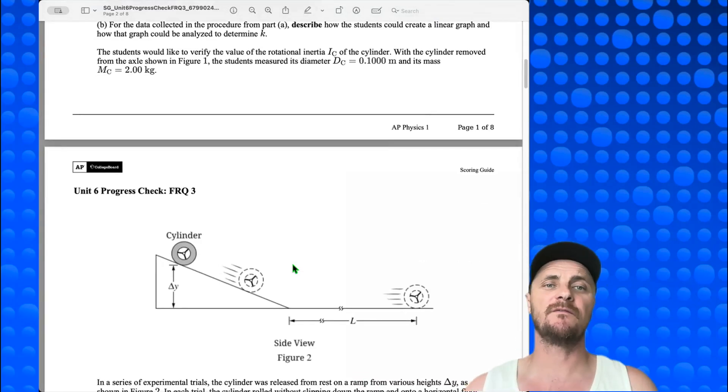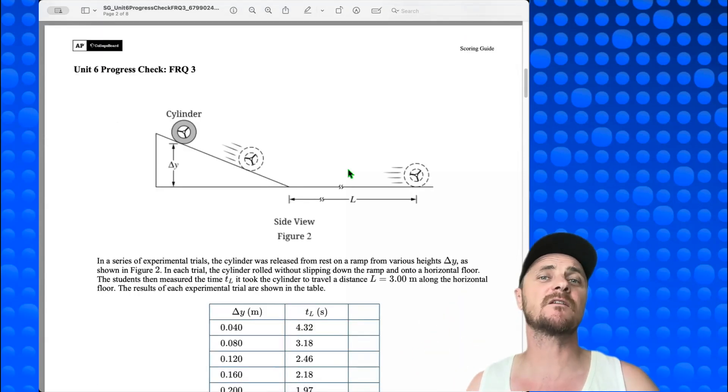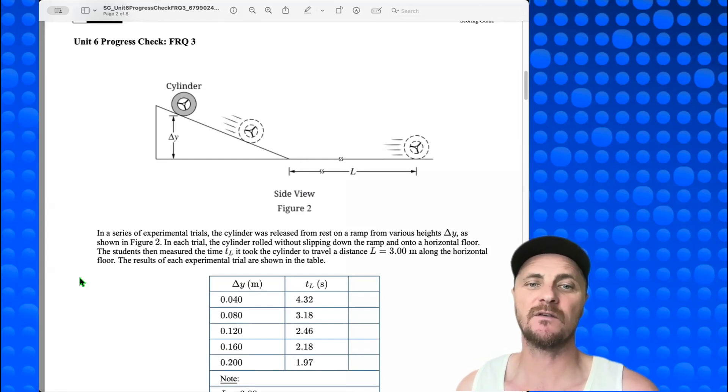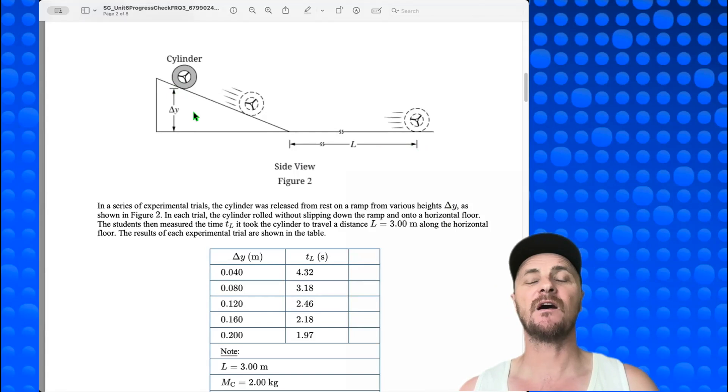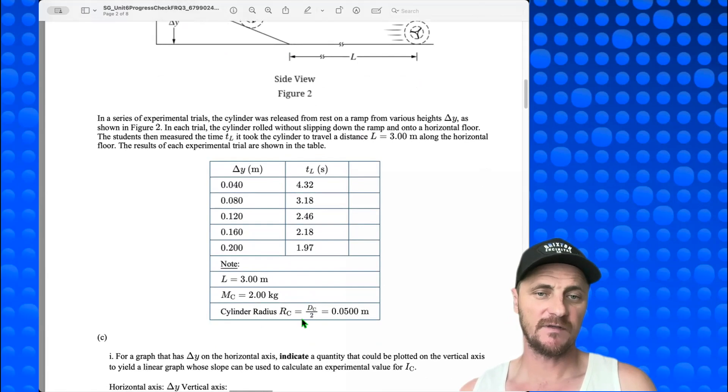Okay, let's get ready for the long part. The students would like to verify the value of the rotational inertia IC of the cylinder. With the cylinder removed from the axle as shown in figure 1, the students measure its diameter, and that would be DC equals 0.1000 meters, and its mass MC equals 2.00 kilograms. And this is a classic conservation of energy situation. In a series of experimental trials, the cylinder was released from rest on a ramp with various heights delta y, as shown in figure 2. In each trial, the cylinder rolled without slipping down the ramp and onto a horizontal floor. The students then measured the time tl it took for the cylinder to travel a distance l equals 3 meters along the horizontal floor. The results of each experimental trial are shown in the table. So we vary the heights at which we release the cylinder, and then we measure the time it takes for the cylinder to travel this length l. And that's what you see right here with corresponding times for the cylinder to travel the length l.